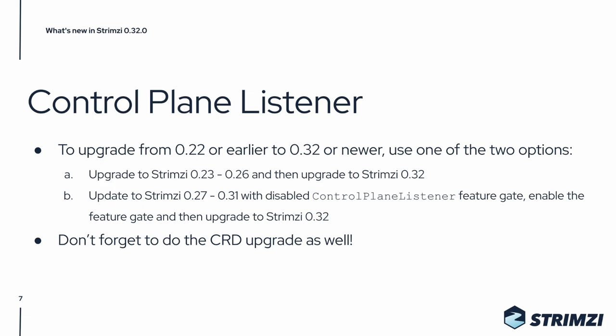This is also what impacts the upgrades from Strimzi 0.22 and older versions. If you are running Strimzi 0.22 or older and want to upgrade to Strimzi 0.32, then you have two options. You can first upgrade to Strimzi 0.23, 0.24, 0.25, or 0.26, and then once you are on one of these versions, you can upgrade directly to Strimzi 0.32.